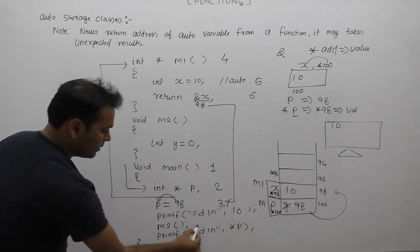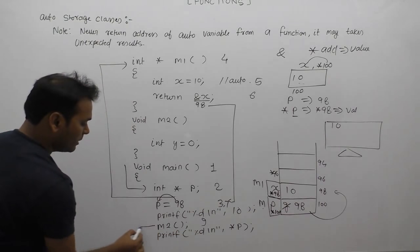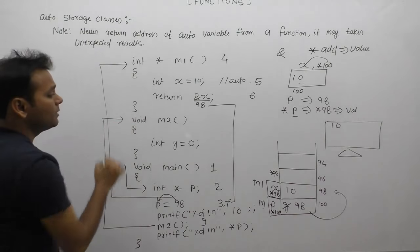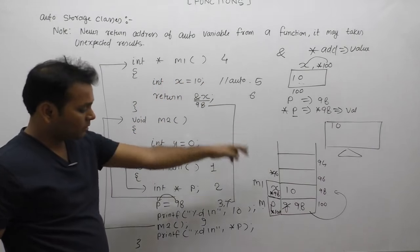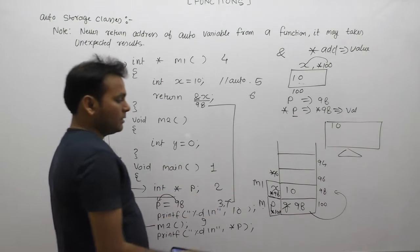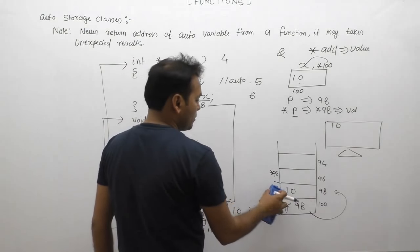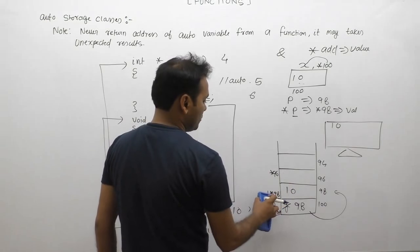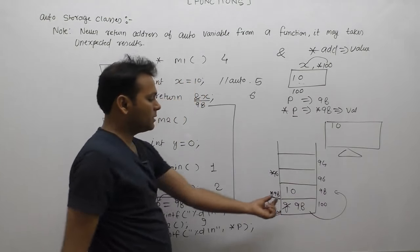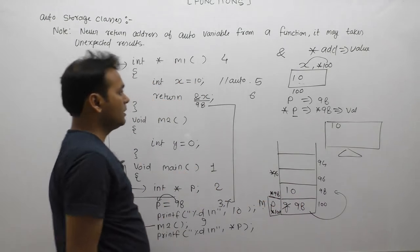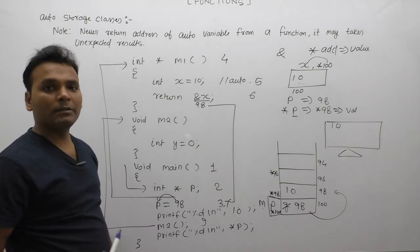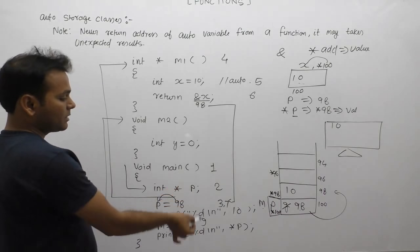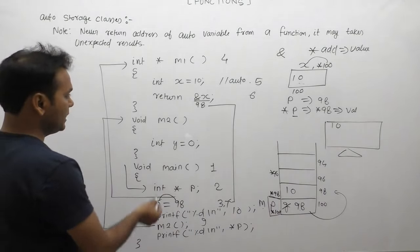Eighth and ninth case: again call m2. M2 function call, control sends inside m2. When m1 returns to calling place, it performs deallocation of m1. The location that was allocated previously still has value 10. Star p's value is still 10. This is expected.